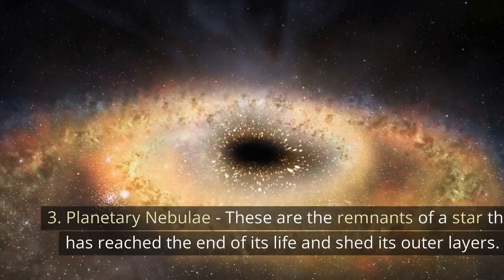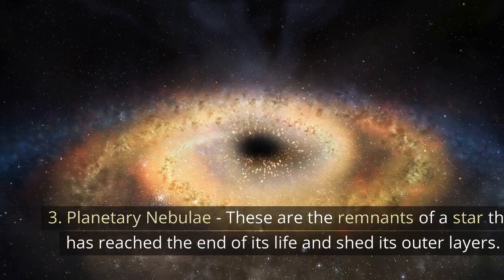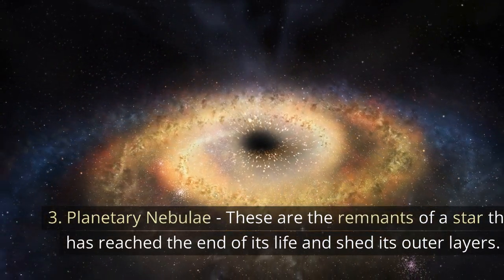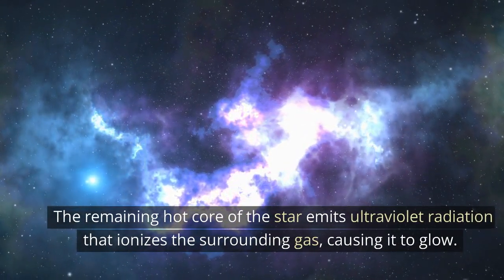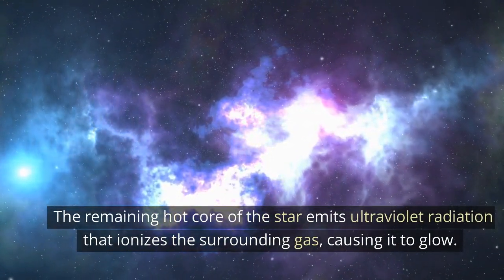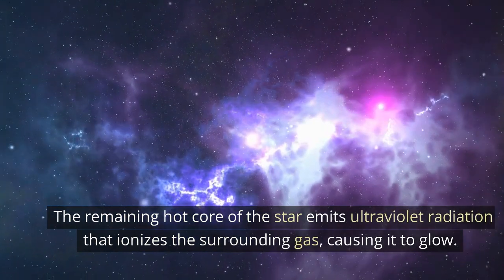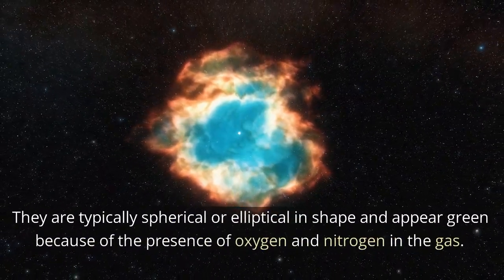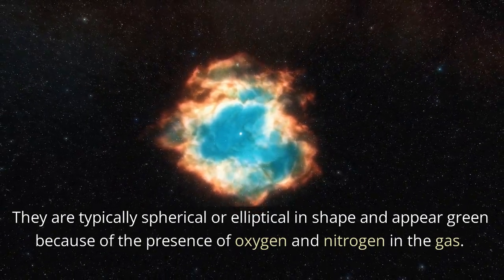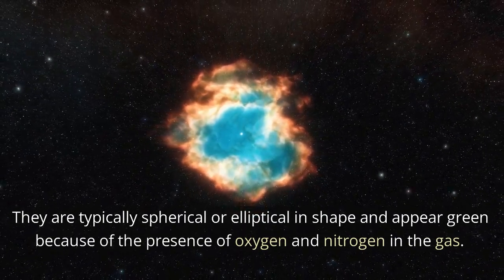3. Planetary Nebulae - These are the remnants of a star that has reached the end of its life and shed its outer layers. The remaining hot core of the star emits ultraviolet radiation that ionizes the surrounding gas, causing it to glow. They are typically spherical or elliptical in shape and appear green because of the presence of oxygen and nitrogen in the gas.